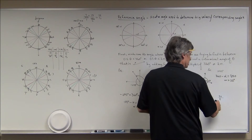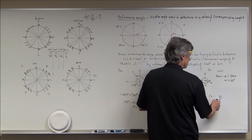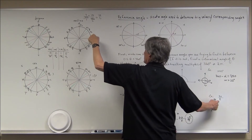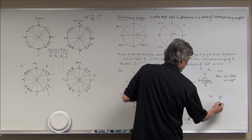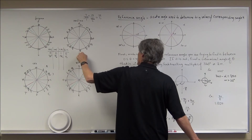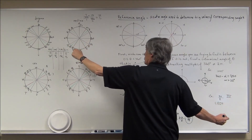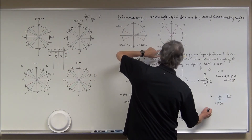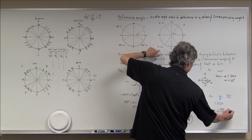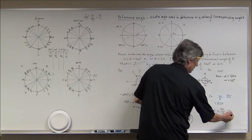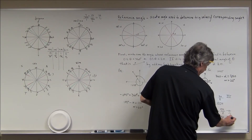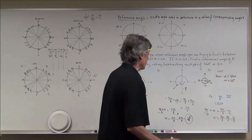For 9π/8: remember the quadrant boundaries are 0, π/2, π, 3π/2, 2π. Since 9/8 = 1.125, it's a little bigger than π but less than 3π/2, so it's in the third quadrant. In the third quadrant: π + α = 9π/8. Subtract π (= 8π/8): reference angle = 9π/8 − 8π/8 = π/8.